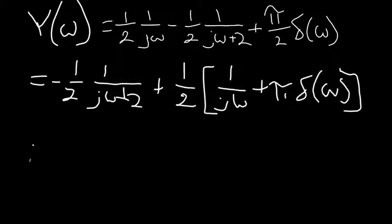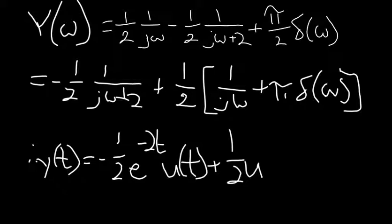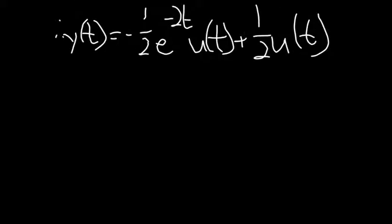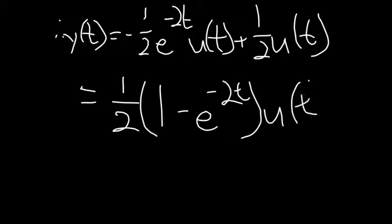Therefore, using the property previously given, we end up with y(t) equals negative one-half times e^(-2t)u(t) plus one-half times u(t), which simplifies to one-half times the quantity (1 minus e^(-2t)) times u(t).